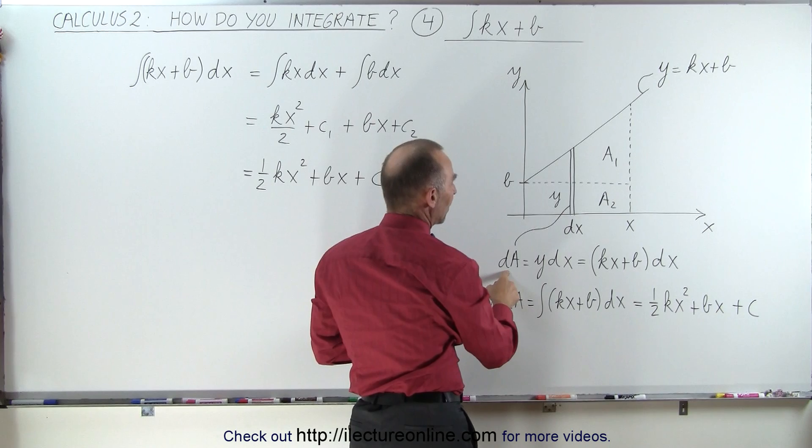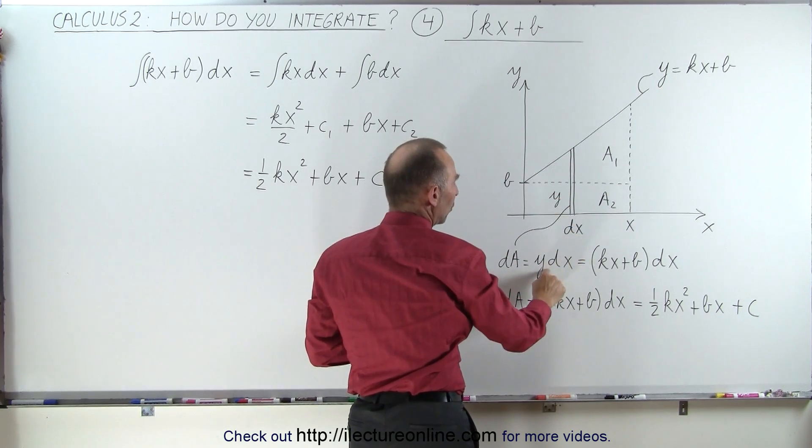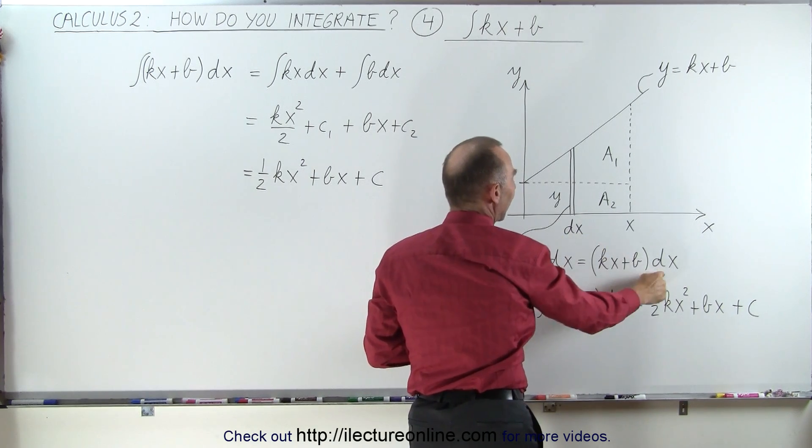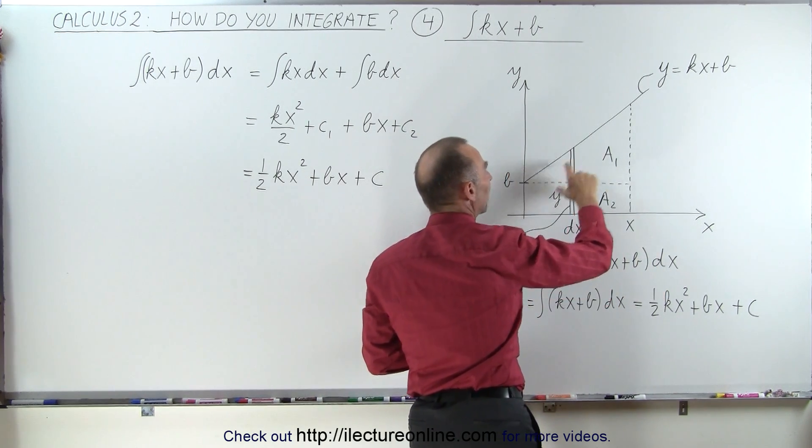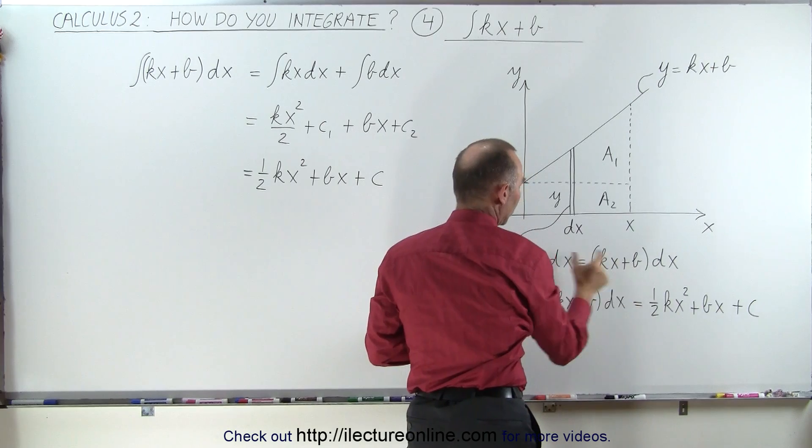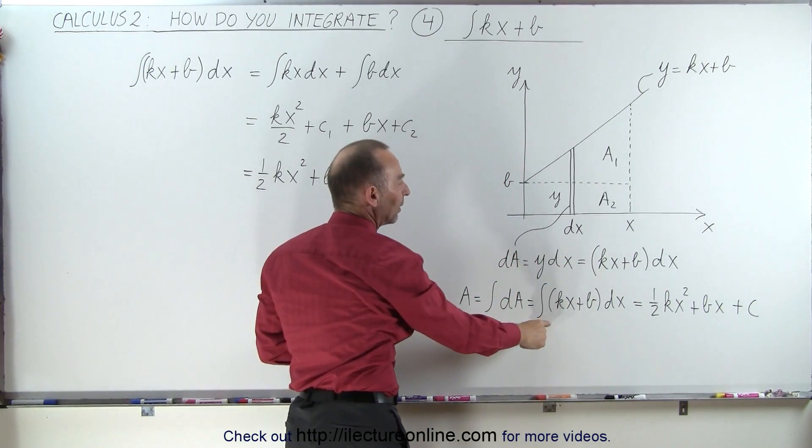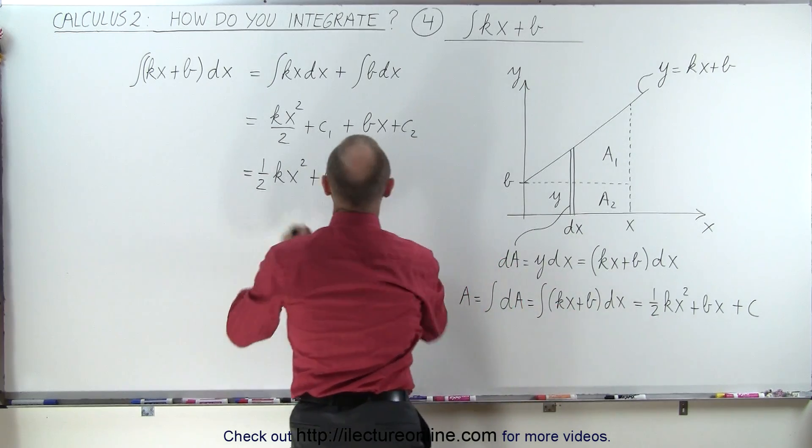So dA can be defined as the height times the width, y times dx, which is equal to kx plus b for y times dx. Notice that the function y is represented right here, so we can replace y by what y is equal to. If we now integrate that, we get the same result as we had over here.